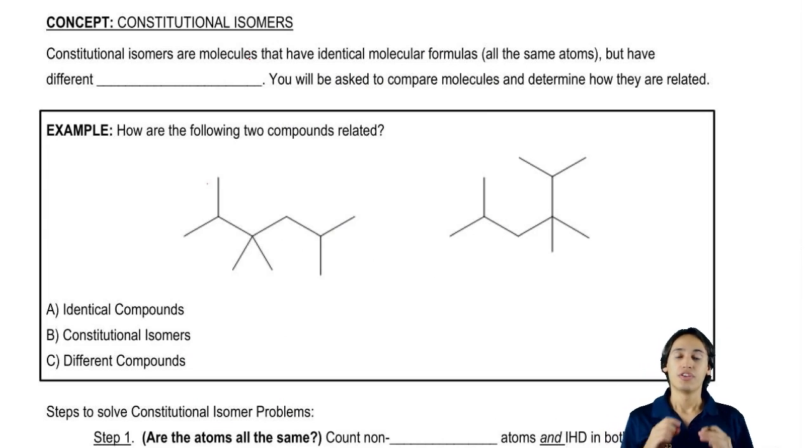So what are constitutional isomers? They're compounds that have the same exact molecular formulas, meaning that both compounds will have all the same atoms in them.